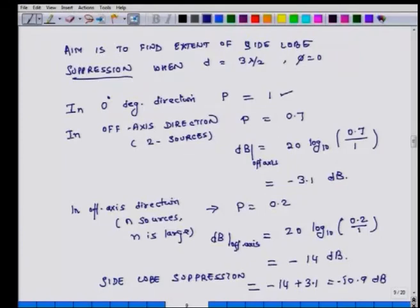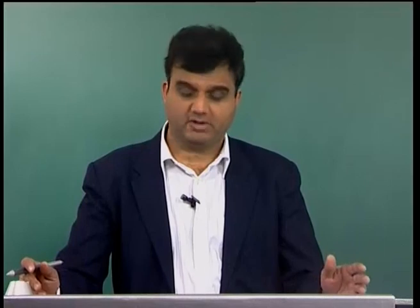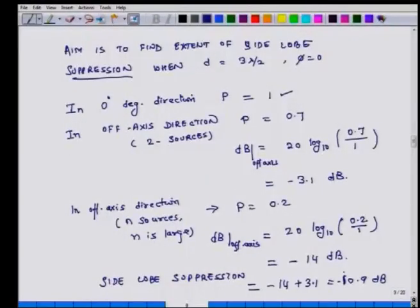Just by virtue of having a distributed source — a very large number of sources over a distance of 1.5λ — the side lobe suppression is as high as 10.9 dB. This approach can be used to develop acoustic transducer arrays that throw sound in a particular direction like a beam, because the amount of sound radiated in off-axis directions is very little. With this we close today's lecture and will continue our discussion on directivity in the next class.